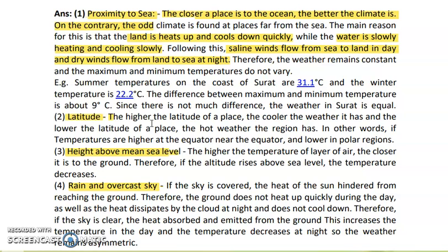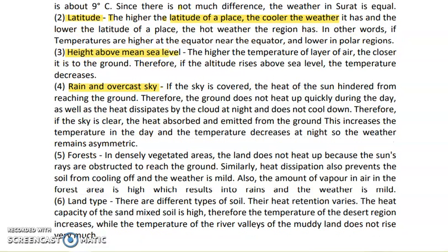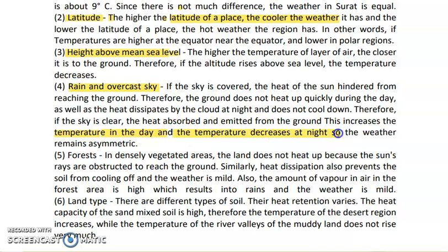Regarding latitude and altitude: the higher the latitude, the cooler the weather. Moving towards a mountain, temperatures are very low in those places. If the sky is overcast, the sun's heat is blocked from reaching the ground. In areas where the sky is cloud-covered, sun rays are obstructed and cannot reach the ground, so it does not heat up quickly during the day. At night, clouds trap the heat, preventing rapid cooling. When the sky is clear, heat is absorbed and emitted from the ground, increasing daytime temperature and decreasing it at night, making weather asymmetric.